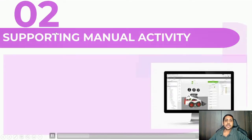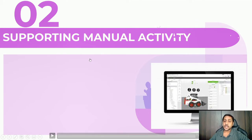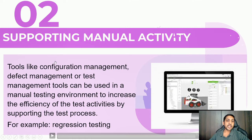The second purpose is supporting manual activities. Sometimes it is not possible to automate everything, so there are certain things that are still done manually. We can use tools to support those manual activities. For example, tools like configuration management, defect management, or test management tools can be used in a manual testing environment to increase efficiency.